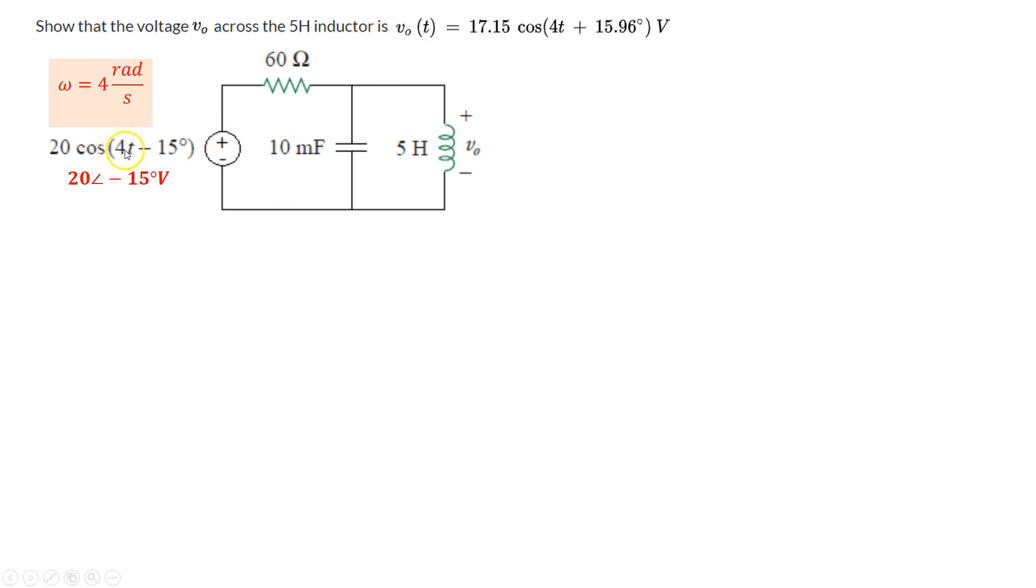So 4 radians per second, that's omega right here, that's the angular frequency, and since that's the only source here, that's the only source of frequency here, so we can write the phasor representation of this with its amplitude 20 and its phase angle minus 15.